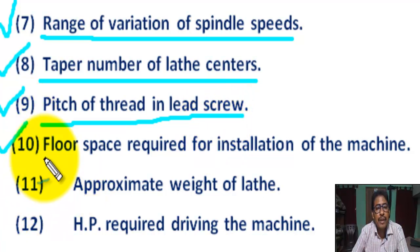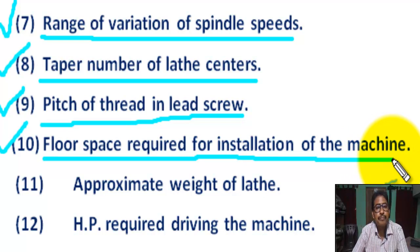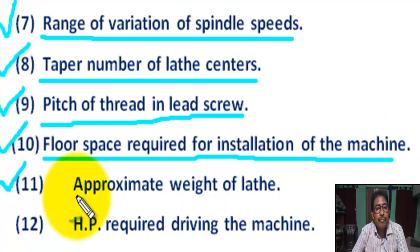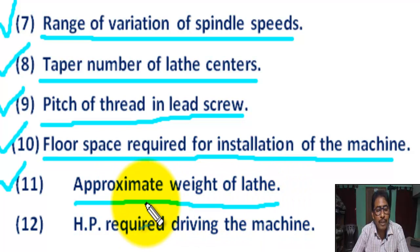Number ten: floor space required for installation of the machine. Number eleven: approximate weight of the lathe. The approximate weight of the lathe must be given for designing the foundation of the lathe.